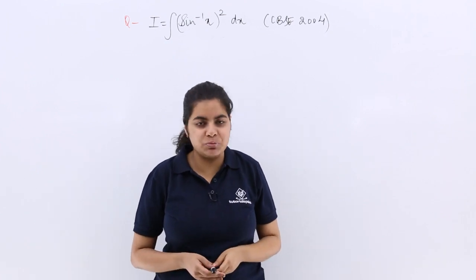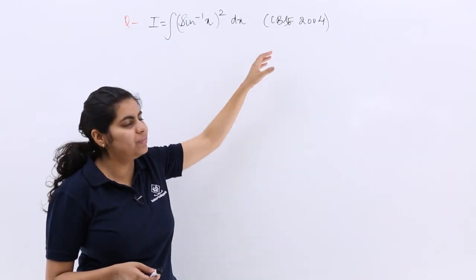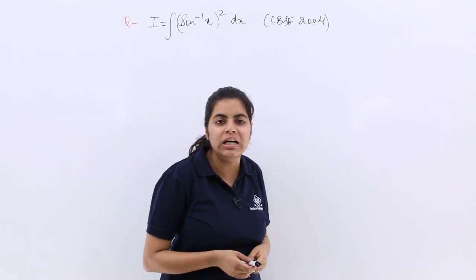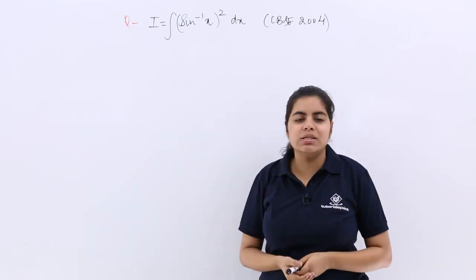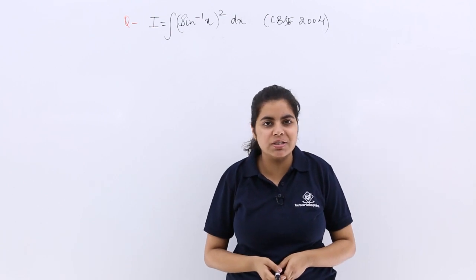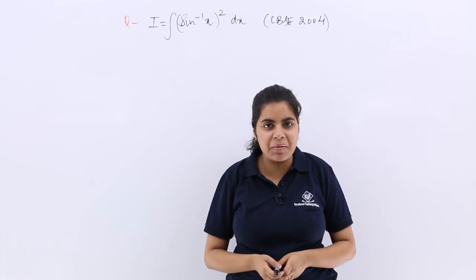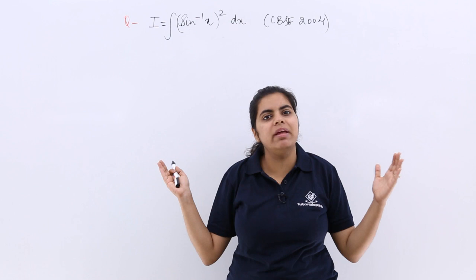In this video, let's see this problem which was asked in the CBSE previous year examination 2004. The problem is: integrate sin inverse x whole square. Now inverse function is there—inverse trigonometric I must say. Sin inverse x squared, and they are multiplied.